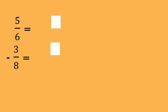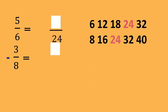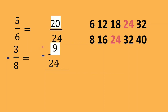Just like the previous example, let us also try this in a vertical format. We list the multiples to get the LCD, which is 24. Then: 24 divided by 6 is 4, 4 times 5 is 20. 24 divided by 8 is 3, 3 times 3 is 9. With the same denominator of 24, we subtract: 20 minus 9 is equal to 11 over the common denominator 24. So that is our final answer.